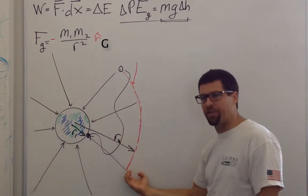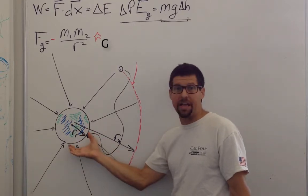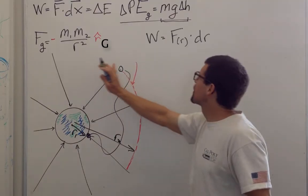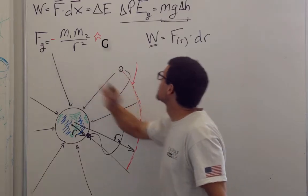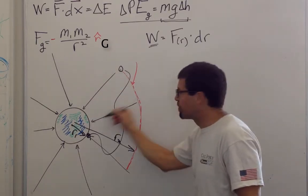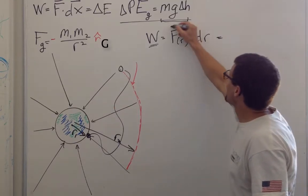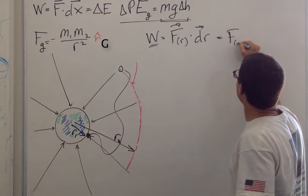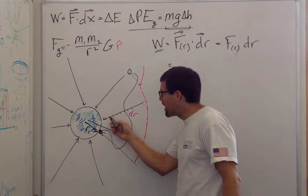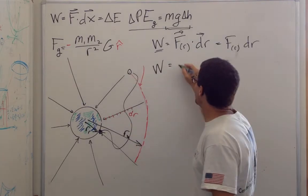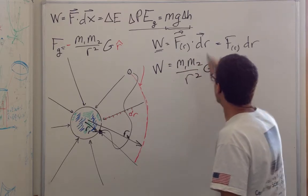That reduces the problem to just finding out how much work it takes to move something from R1 to R2. And we know this must be a higher energy because if we let it go, it would fall, and that potential energy would turn to kinetic energy as it's sped up. This reduces the expression to work is equal to the force as a function of radius dot dr, the displacement in the radial direction.